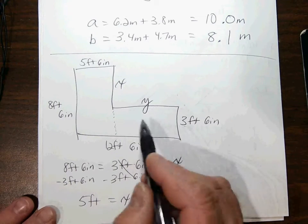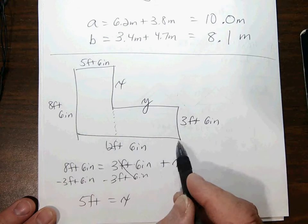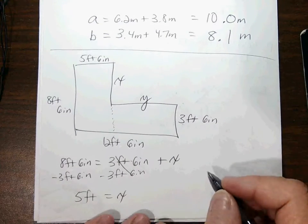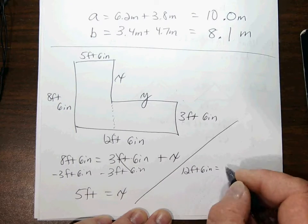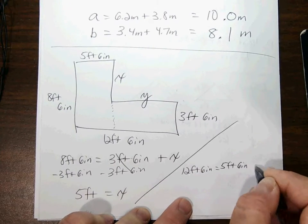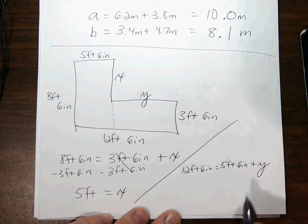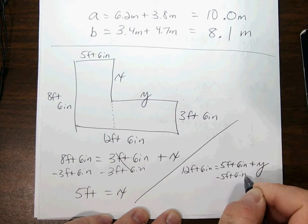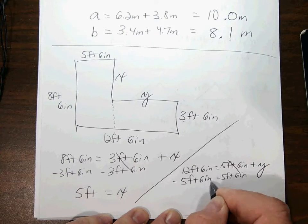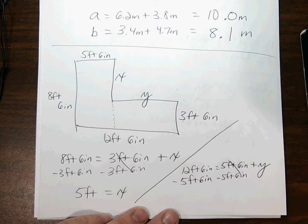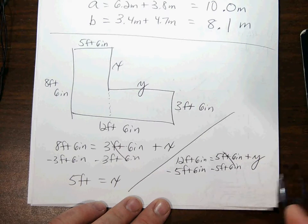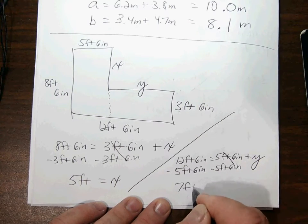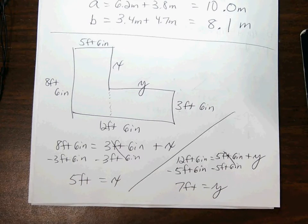Now what about our other missing side? What about Y? The whole big long side here is 12 feet 6 inches. That little side there is 5 feet 6 inches. So I know that 12 feet 6 inches equals 5 feet 6 inches plus whatever Y is. So how do I solve for Y? I subtract. We could have had a complication here of feet and inches not matching up exactly, and we'd have to do a little converting. We've done that in previous sections. But in this case, the inches work out nicely. They're gone. So I'm just going to have 7 feet for my value of Y. And that's how we do a problem like that.